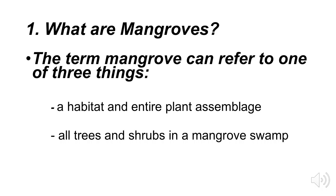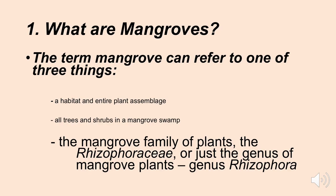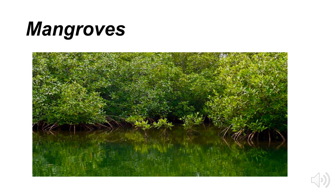The term mangrove can refer to one of several things. It can refer to a habitat and an entire plant assemblage — all trees and shrubs in a mangrove swamp. It can also refer to the mangrove family of plants, rhizophoraceae, or just the genus of mangrove plants, the genus rhizophora. We're basically talking about the mangrove biome, which is a biome on the edge of the oceans and the land system.